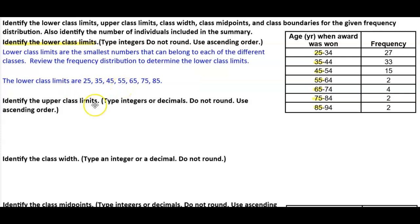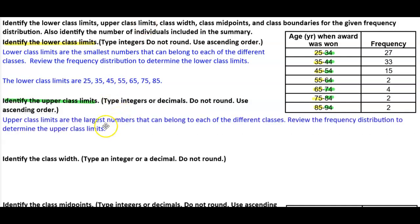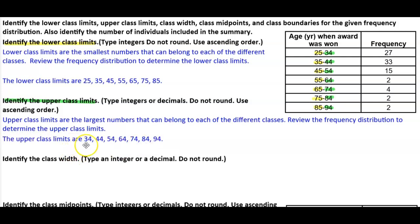Now we want to identify the upper class limits. The upper class limits are the largest number that can belong to each of the different classes. By reviewing the table, the upper class limits are 34, 44, 54, 64, 74, 84, and 94.